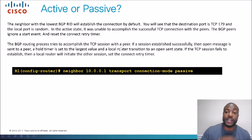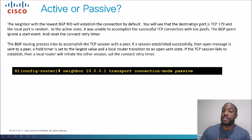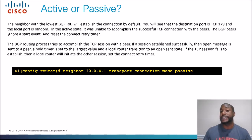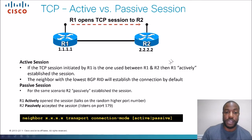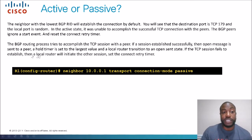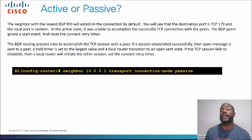These are just some definitions on active and passive — we basically covered that anyway. The router with the lowest ID is going to establish the connection by default. The receiving end is going to talk on TCP port 179 — that's the destination port. The local port is random, so the one that's speaking will talk on a higher random port number. The sender is active and the receiver is passive and talks on port 179. If the TCP session fails to establish, the local router will initiate another session and set the connect retry timer. We'll talk about the different states in the next section.